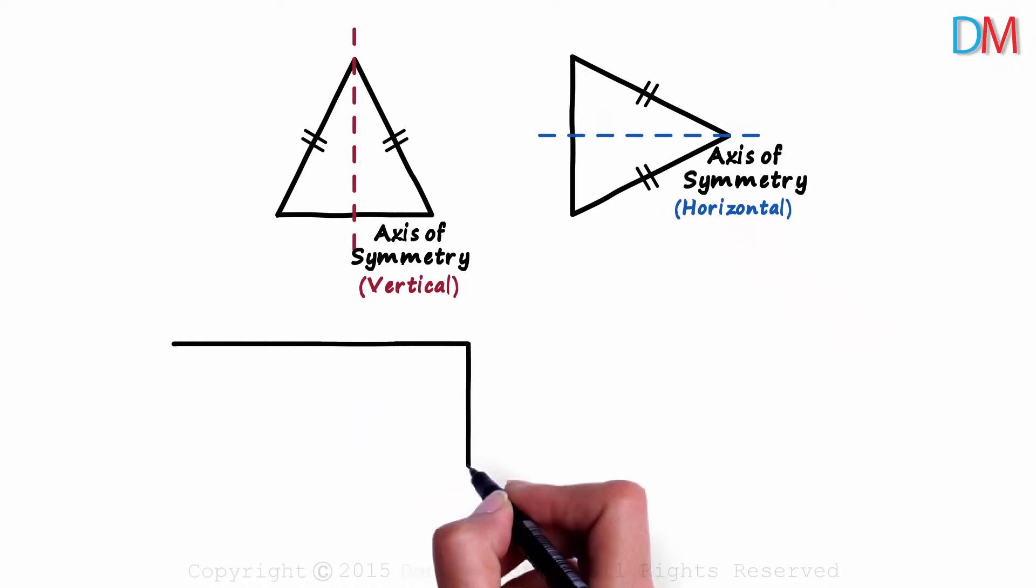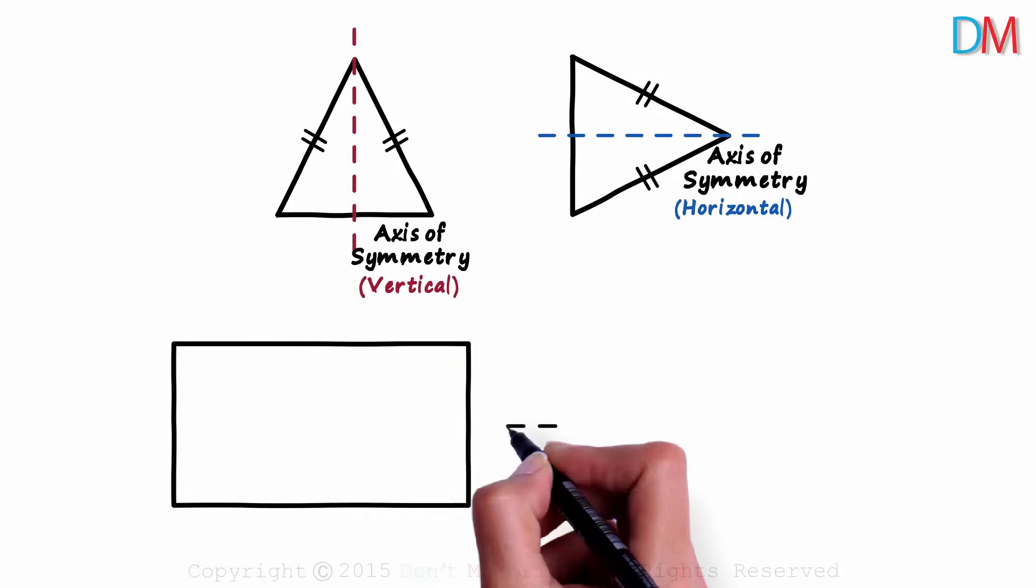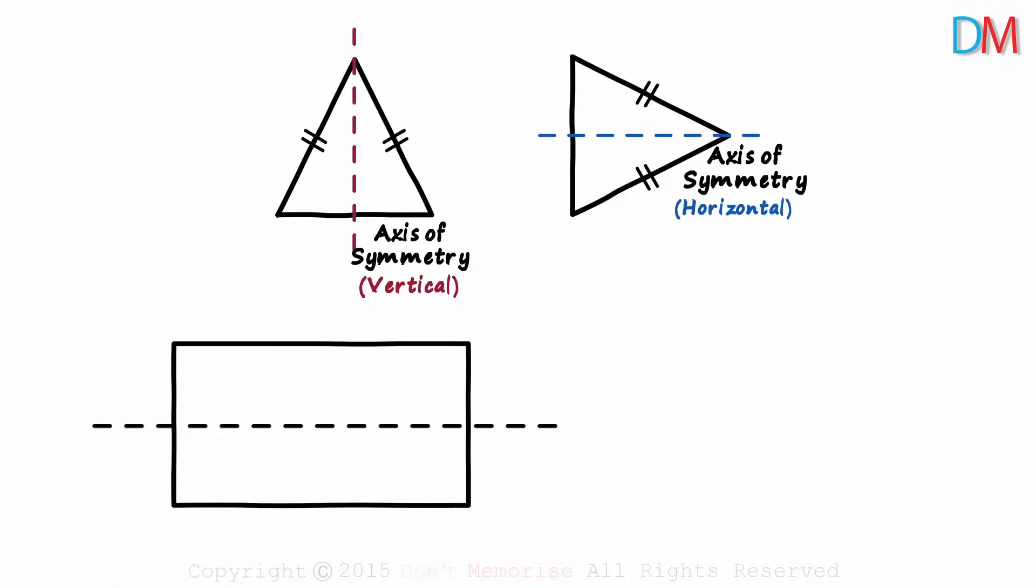Look at this rectangle. These two parallel sides are equal. These two parallel sides are equal. And all four angles measure 90 degrees. It will have a horizontal axis of symmetry like this. When one part is flipped over, it will overlap exactly with the other.